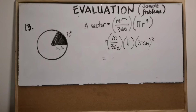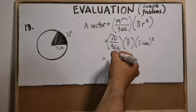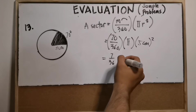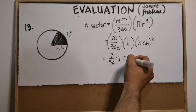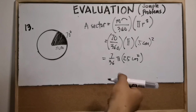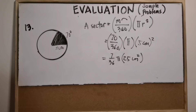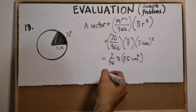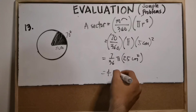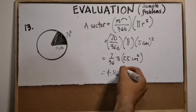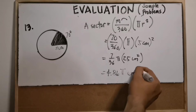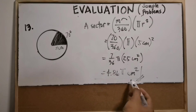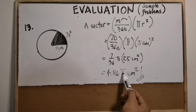70 divided by 360 is equal to 7 over 36. Copy pi, and 5 squared is 25 square centimeters. 7 over 36 times 25 equals approximately 4.86 pi square centimeters. Don't forget to include pi. If the answer choices are in decimal form, you can convert pi to 3.14 or input pi directly into the calculator.